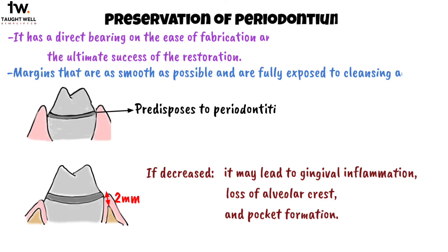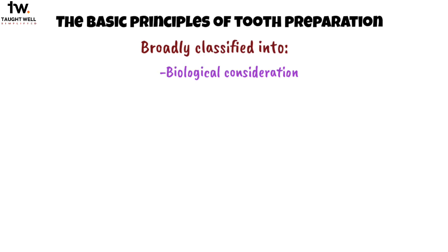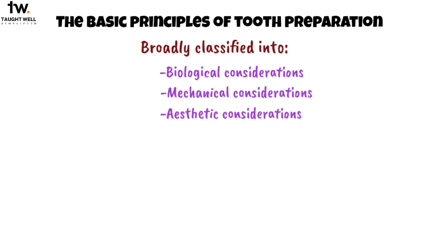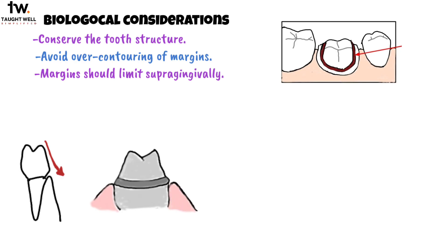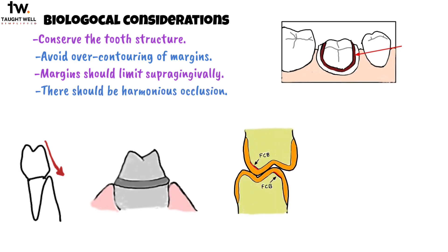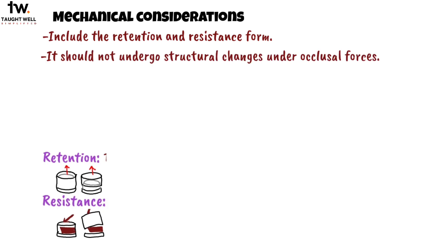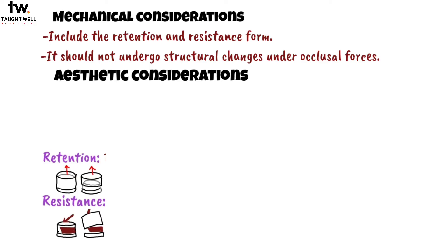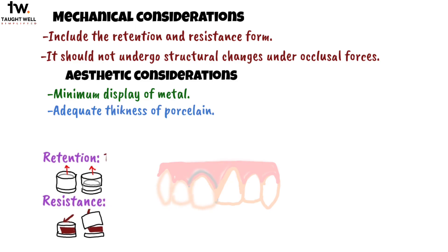The basic principles of tooth preparation are broadly classified under three headings: biological considerations, mechanical considerations, and aesthetic considerations. Biological considerations include conserving tooth structure as much as possible, avoiding over-contouring of margins, limiting margins supra-gingivally, maintaining harmonious occlusion, and preventing pulp injuries during fixed prosthodontic procedures, especially complete crown procedures. Mechanical considerations include the retention and resistance form, ensuring the restoration does not undergo structural changes under occlusal forces. Aesthetic considerations include minimum display of metal, adequate thickness of porcelain, and placing margins sub-gingivally.